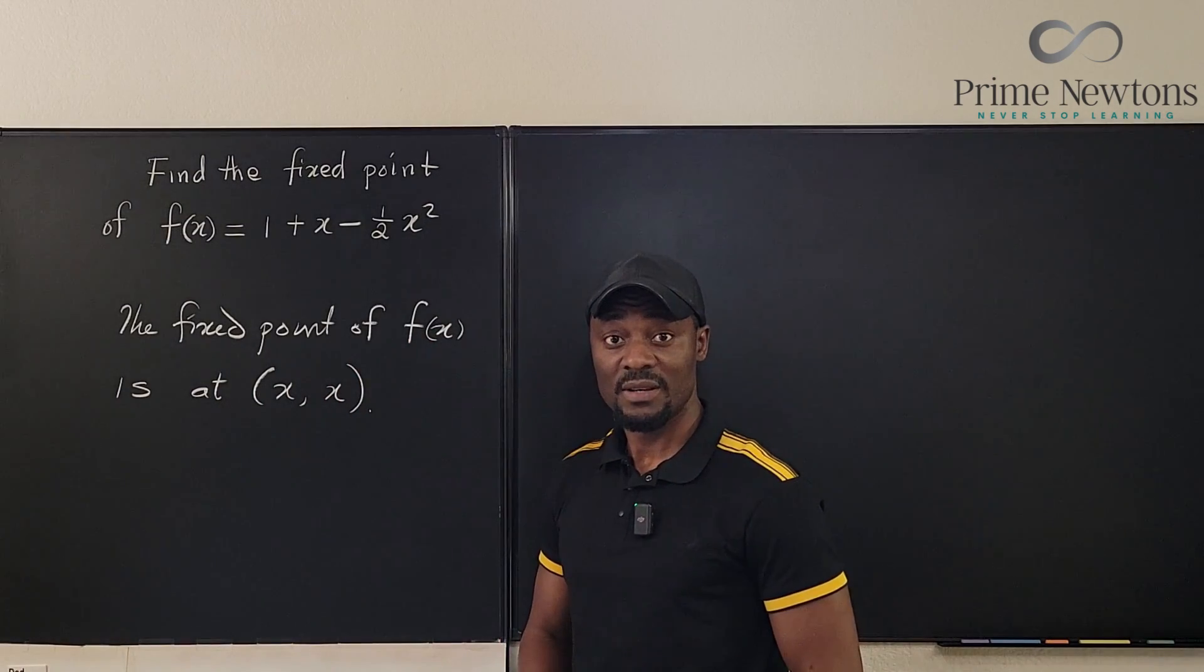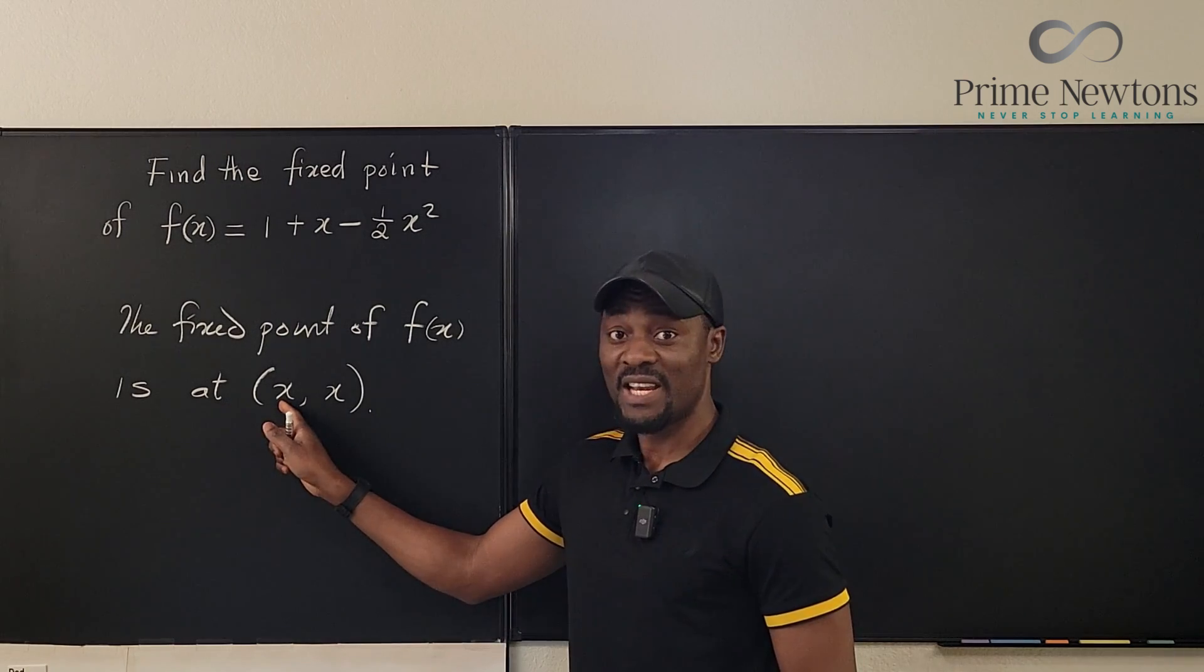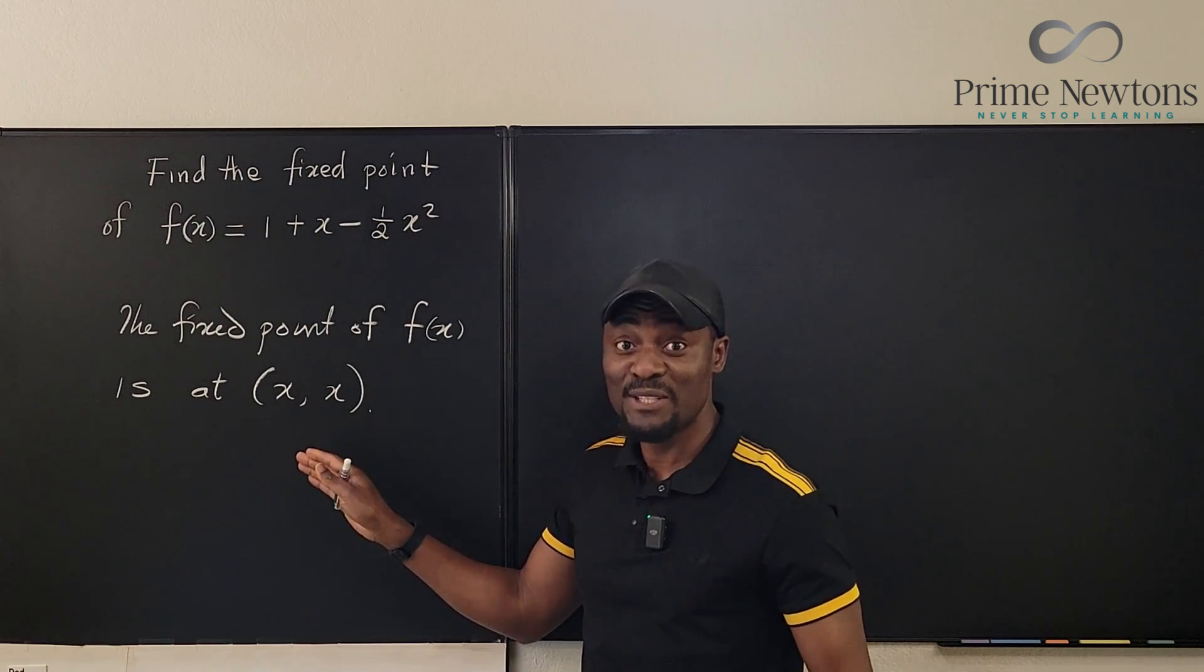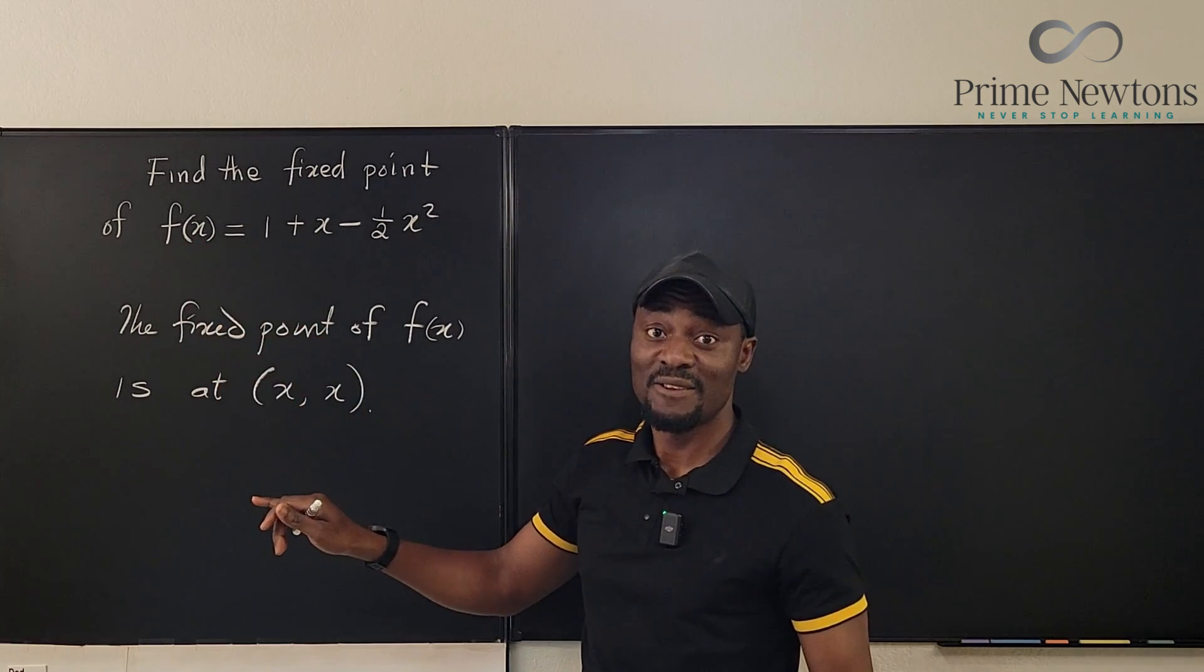The fixed point of f(x) is that x where when you put in x, you get x. So in order to find your fixed point, you just have to replace f(x) with x, because then we can solve this equation. That's it.